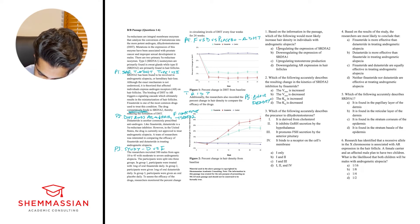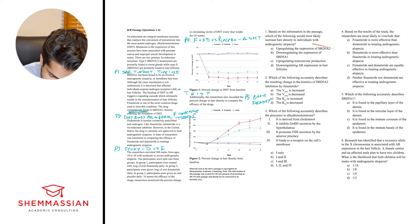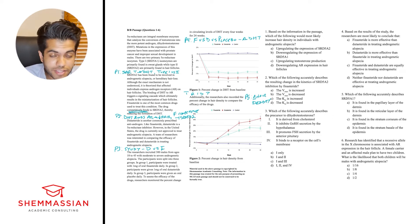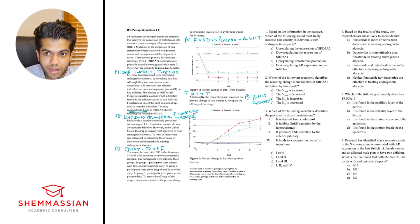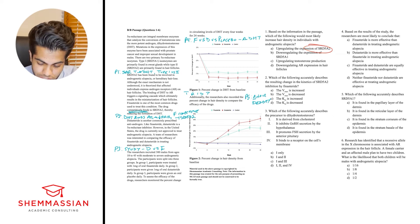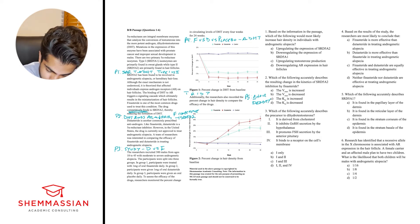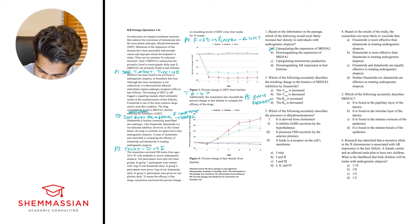Option A: up-regulating the expression of SRD5A2. If this enzyme — type 2, found in hair follicles — is up-regulated, it would make more DHT, because 5AR converts testosterone into DHT. More DHT means more DHT binding to the androgen receptor, leading to more of that signaling cascade and more miniaturization. This doesn't help hair density — it's the opposite of what we want. So A is incorrect.